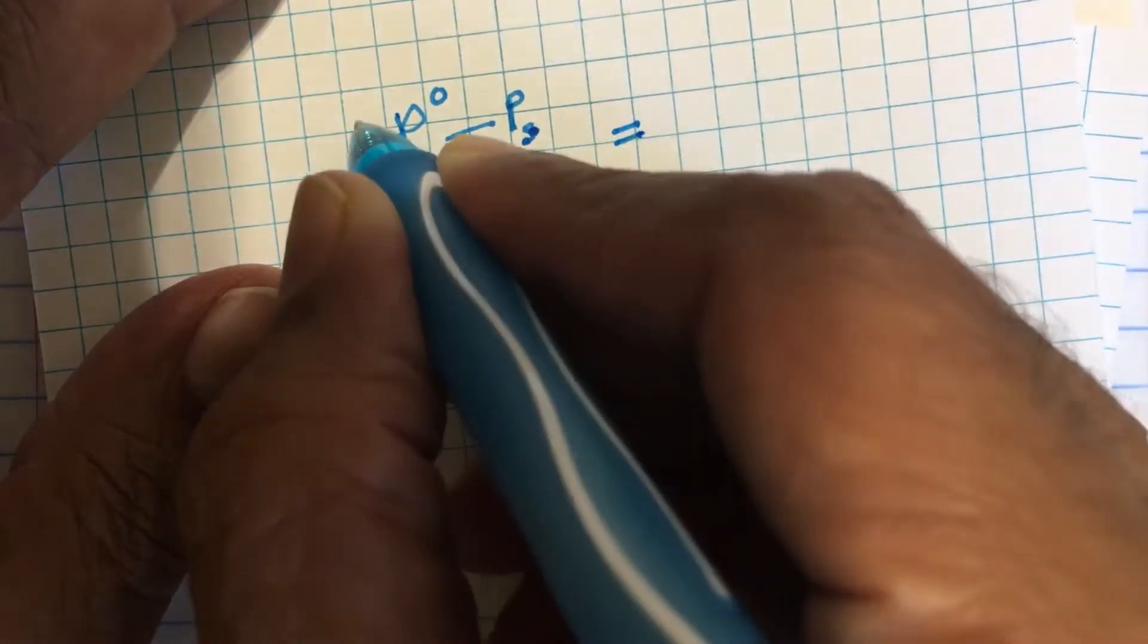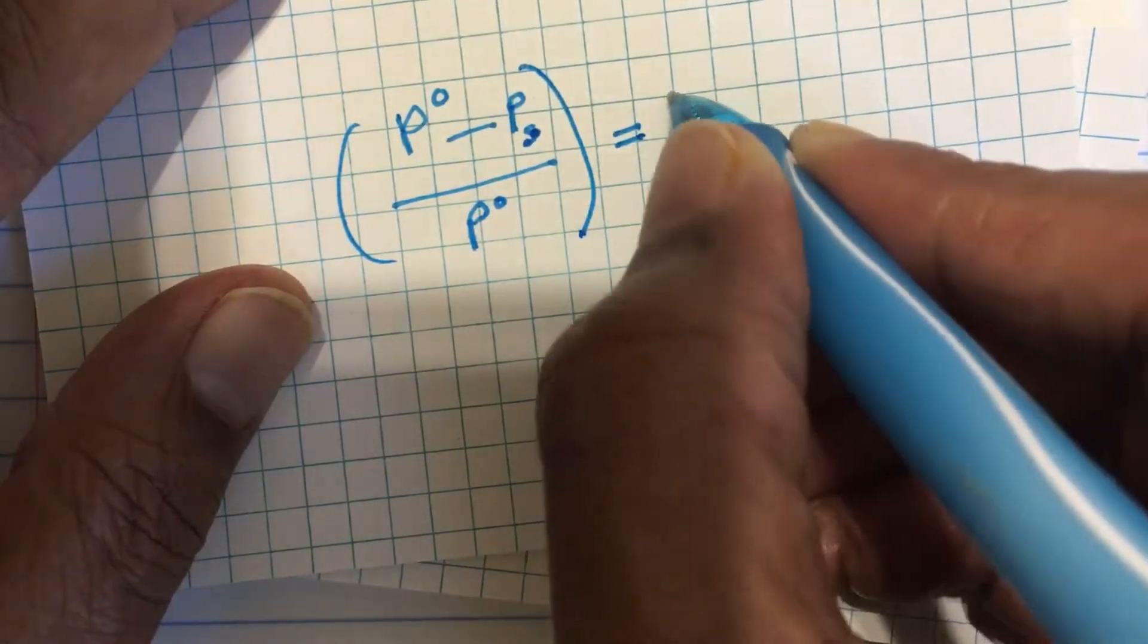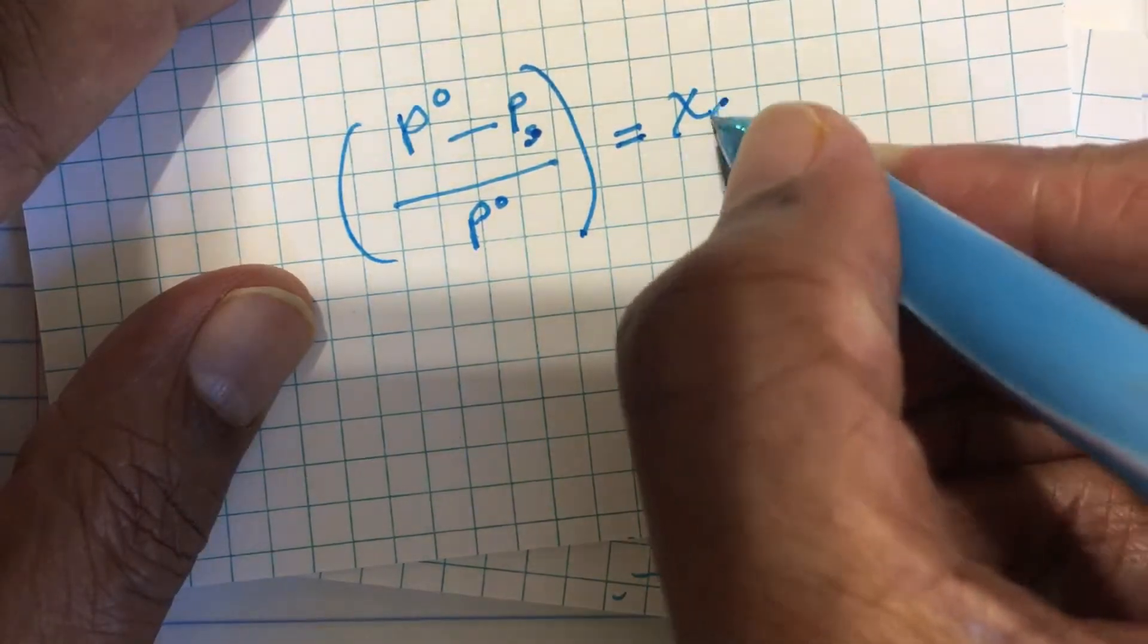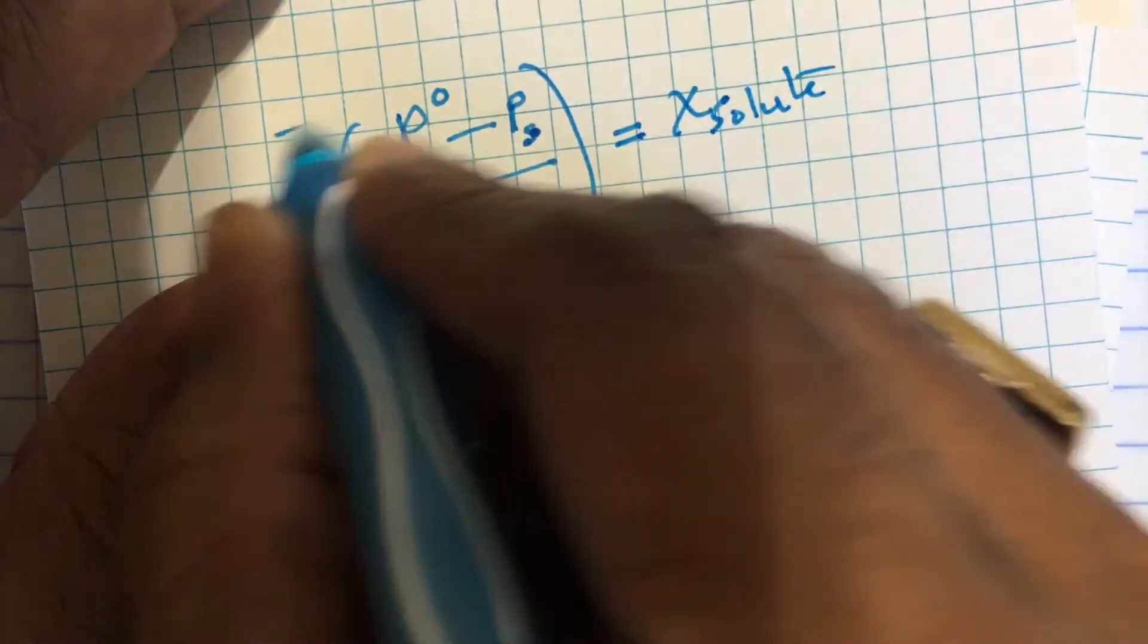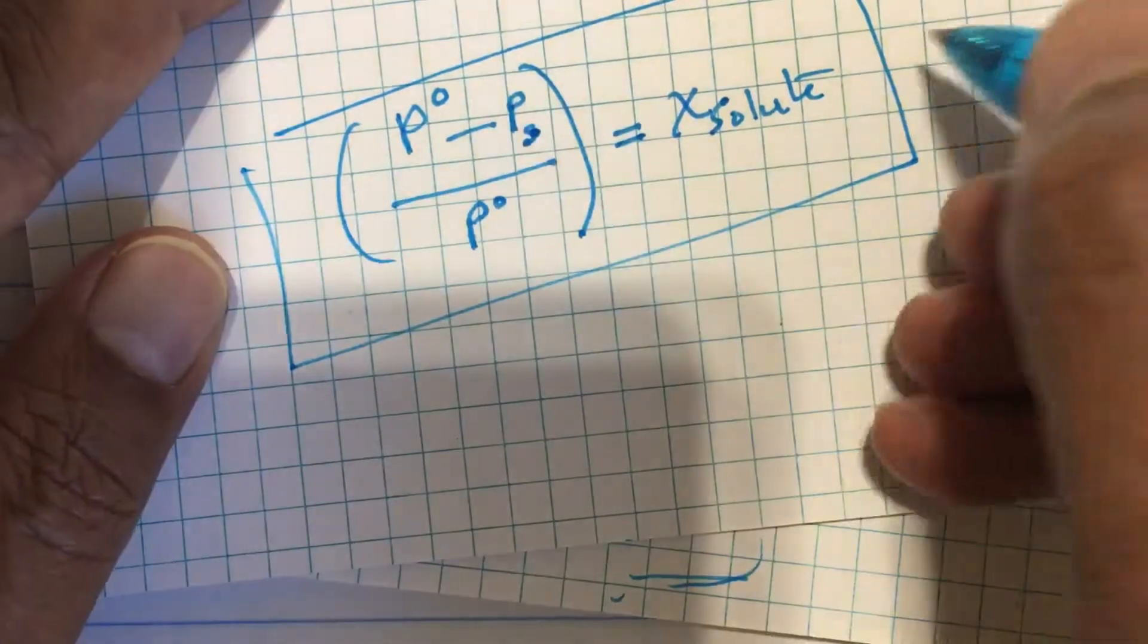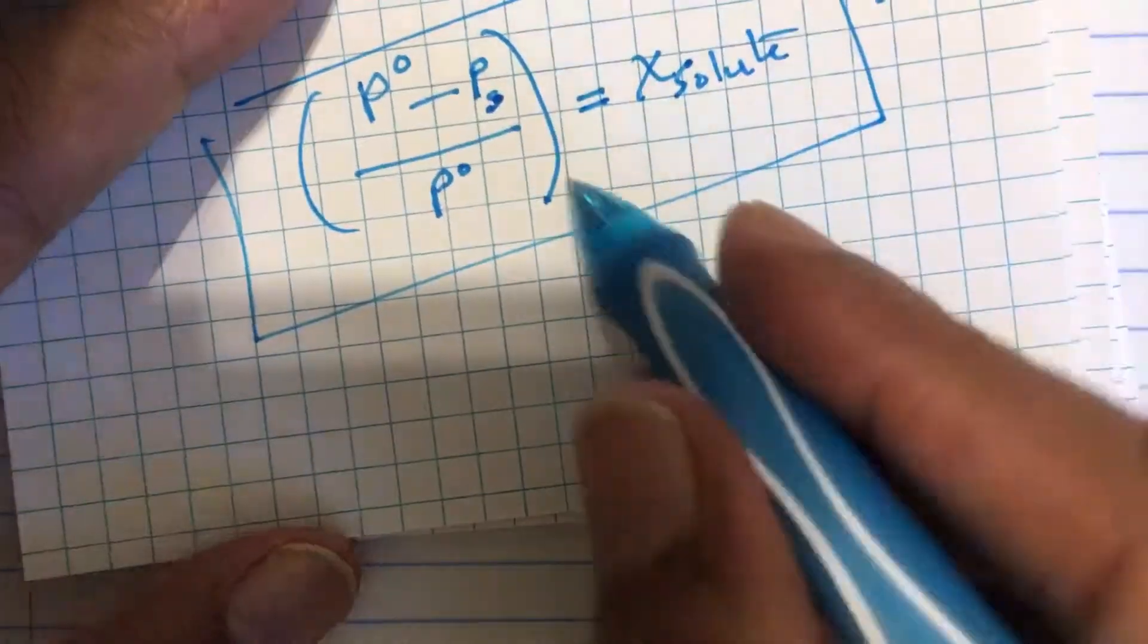Raoult's law states that the relative lowering of vapor pressure is always equal to mole fraction of non-volatile solute. All the solutions which strictly obey the Raoult's law are called ideal solution.